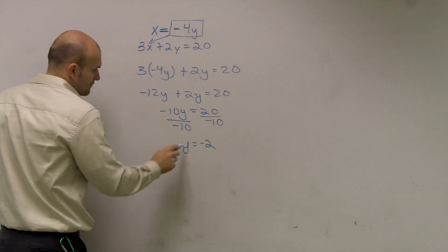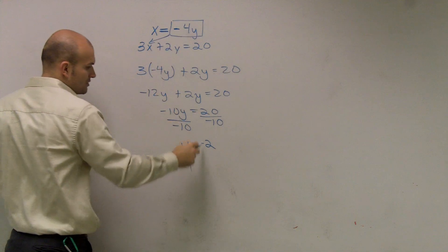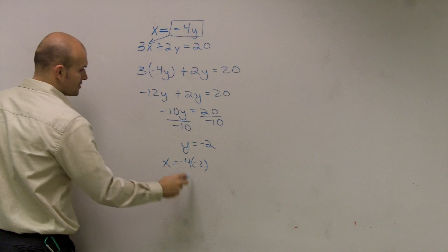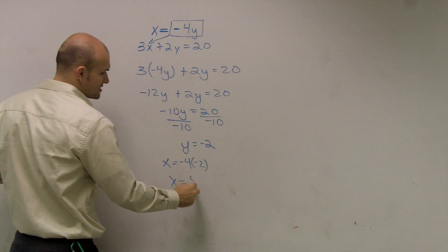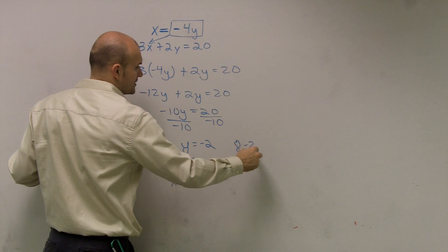So now I can write, if y equals negative 2, x equals negative 4 times y, which is negative 2. So therefore, x equals negative 4 times negative 2, which is a positive 8. So you can write your coordinate point as 8 comma negative 2.